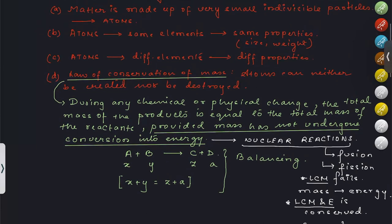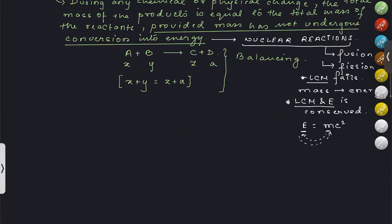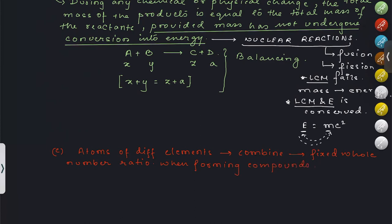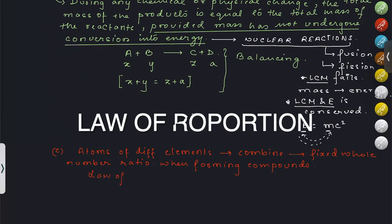The fifth postulate of Dalton's Atomic Theory states that atoms of different elements combine in a fixed whole number ratio when forming compounds. This is also a particular law given by Joseph Proust, known as the Law of Definite Proportion, which Dalton incorporated into his theory.